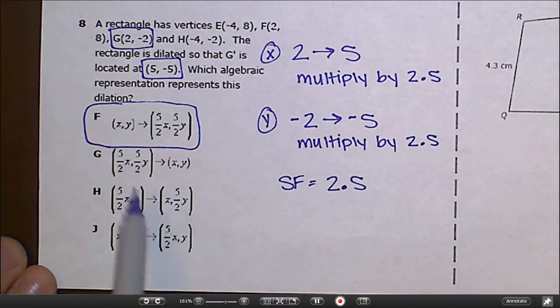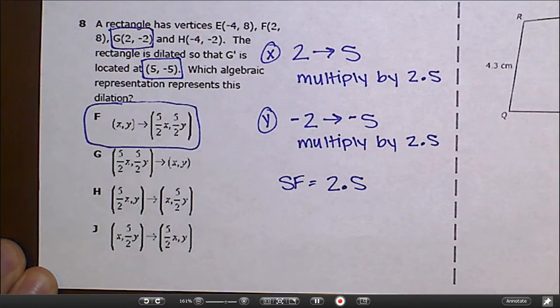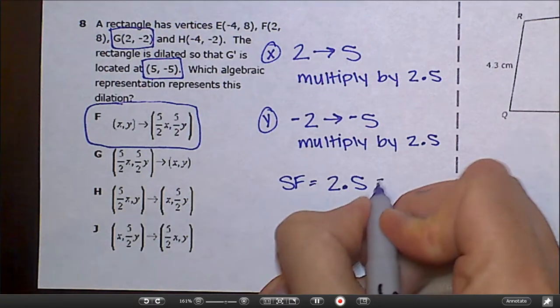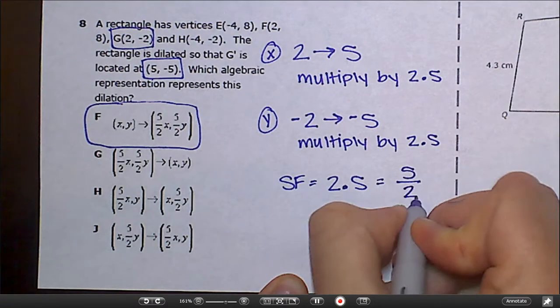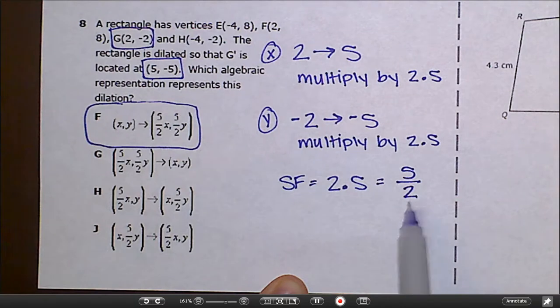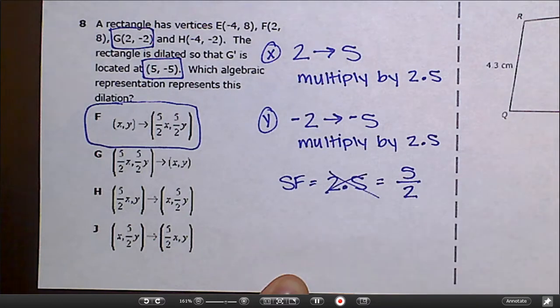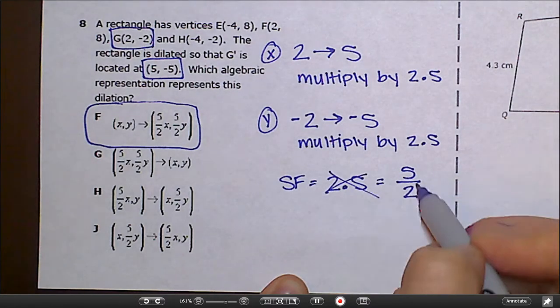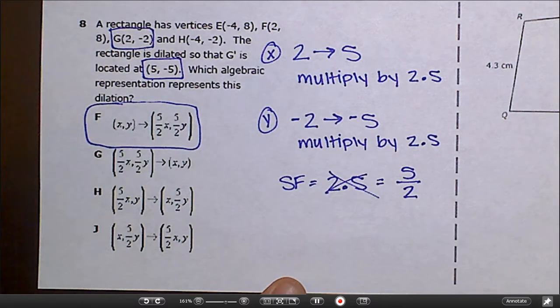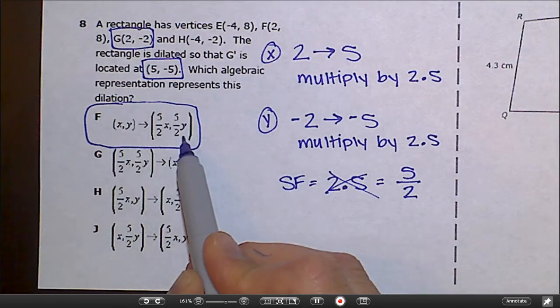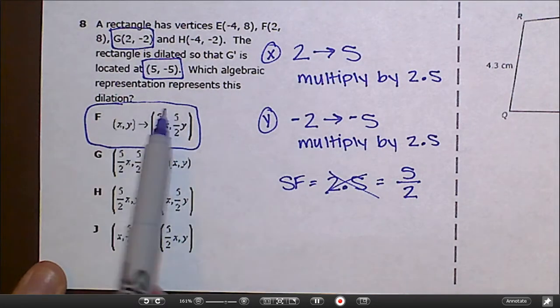But looking at my answers, I don't see 2.5 anywhere. I do see a lot of 5/2. Well, let's divide 5 by 2. If you do that on your calculator, you'll actually see that that's the same thing as 2.5. So we're just going to ignore this since we don't have any of those in our answer choices, and we're going to say the scale factor is 5/2. So 5/2 times x and 5/2 times y. So that is what happened.